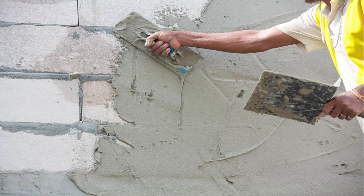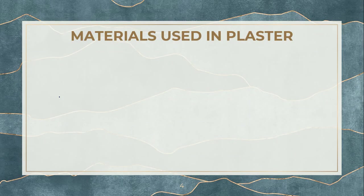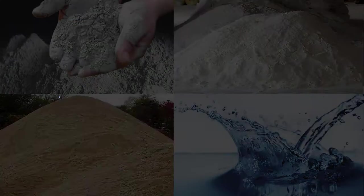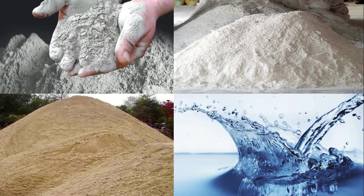You can see in this figure — this person is applying a cement plaster or cement mortar and it's covering the entire wall. Now let's see what are the different kinds of materials used in plaster. We have ordinary Portland cement, we have lime or clay powder, and you can also use surki. Then we have aggregates, water, and if you want workability, you can use admixtures — admixtures are purely optional. So these materials make a plaster.